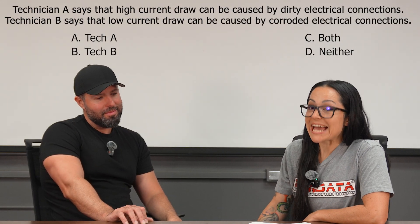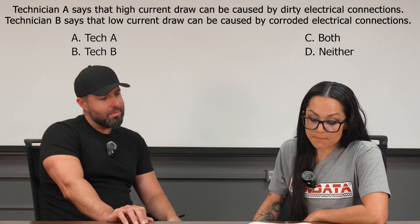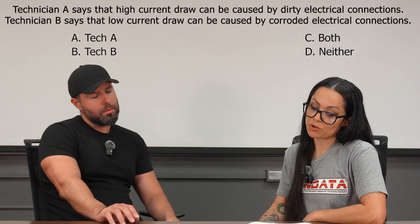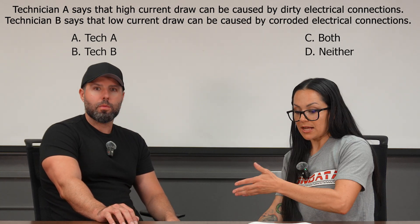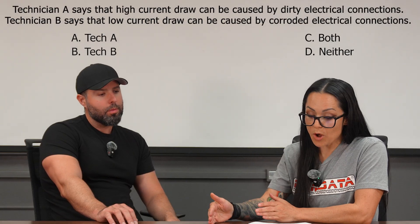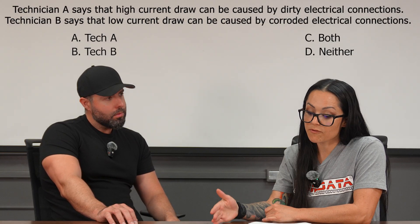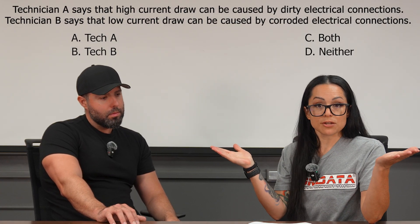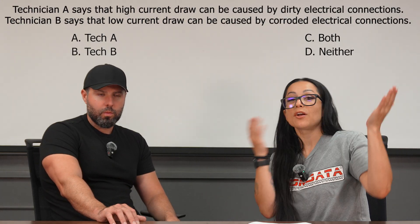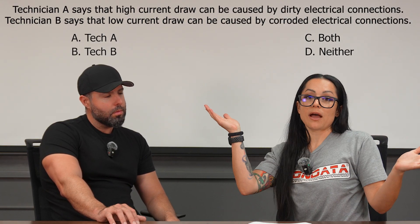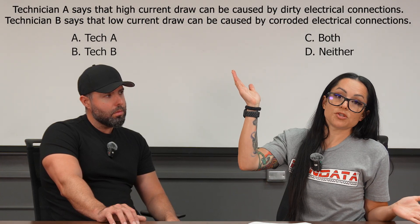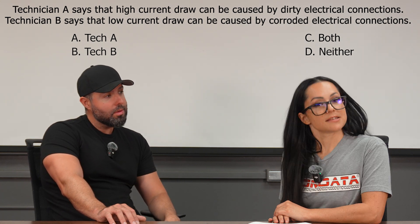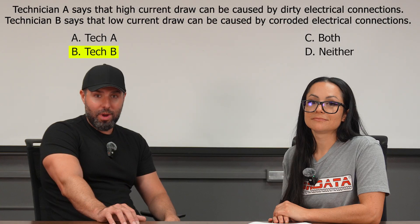Technician B says that low current draw can be caused by corroded electrical connections. That's kind of exactly what we were just talking about, and they're very specific here — it says corroded. We know corrosion is a high-resistance fault, therefore causing a low current situation. Current and resistance are on a teeter-totter: if we have high resistance like corrosion, current drops down. The opposite is true with low resistance — current goes up. So we're going with B only.